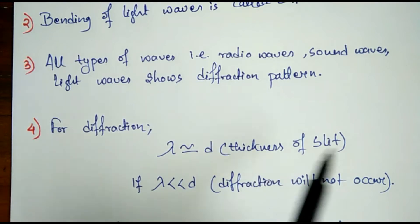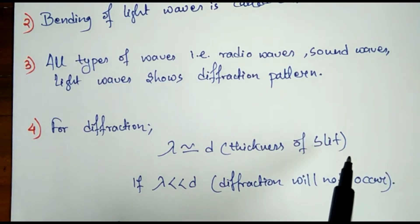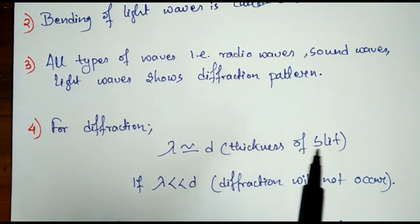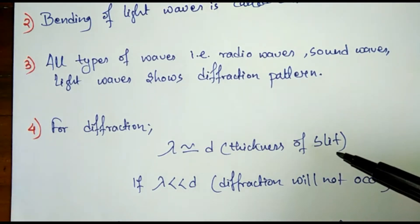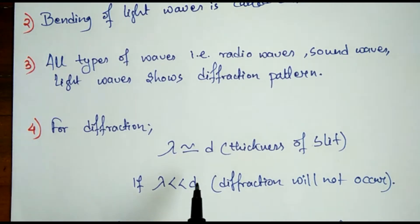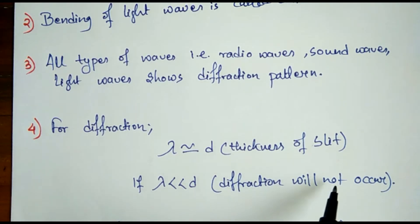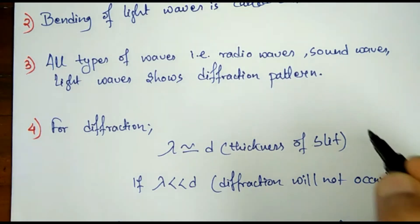The slit is the obstacle through which you need to pass light to produce the phenomenon of diffraction. But if lambda, the wavelength, is very much smaller than the thickness of the slit, then diffraction will not occur. This is because the wavelength of light is in nanometers.